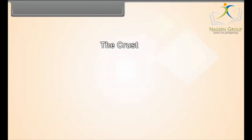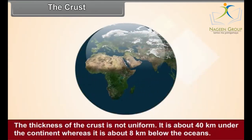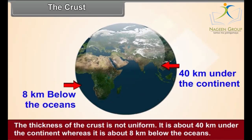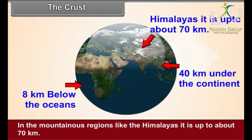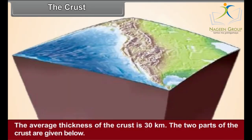The crust. The thickness of the crust is not uniform. It is about 40 kilometers under the continent, whereas it is about 8 kilometers below the oceans. In mountainous regions like the Himalayas, it is up to about 70 kilometers. The average thickness of the crust is 30 kilometers.